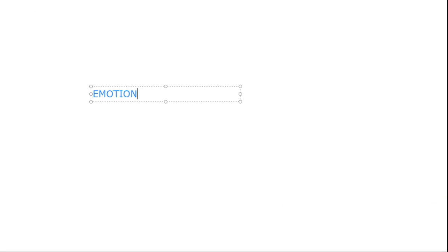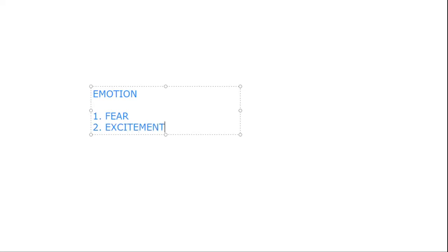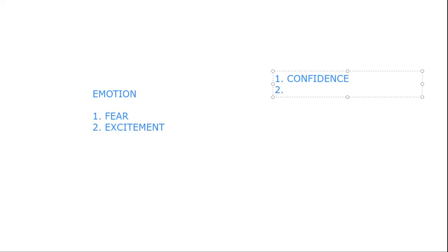The worst enemy of a trader is his emotion. The emotion can be divided into two: number one, we have fear, and number two, we have excitement. These emotions influence your trading psychology in terms of your confidence, over-trading, and fear.